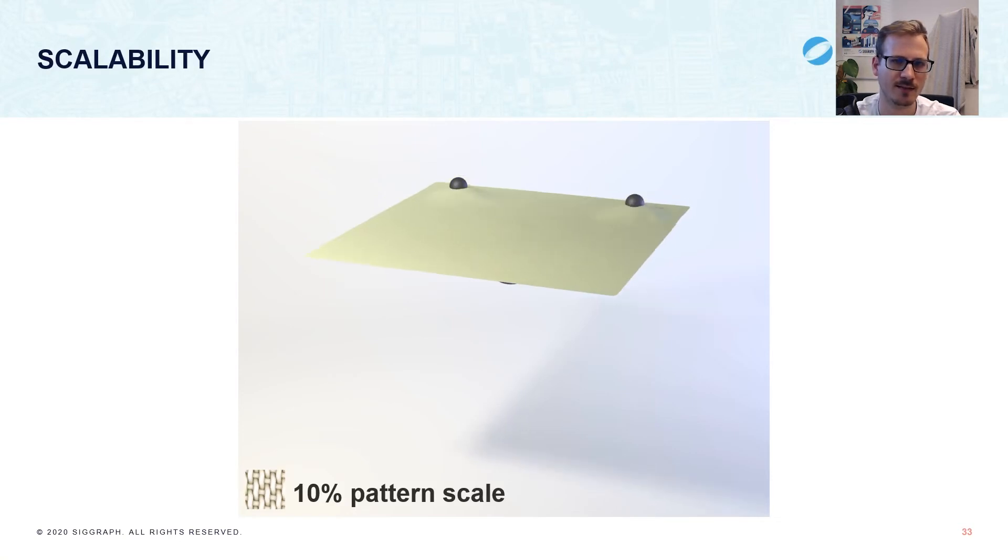Similarly, we can easily scale down the stitch size to where the texture of the yarns is barely visible. For a yarn level simulation, this would increase the cost substantially, while for our homogenized materials, it barely increases the cost.